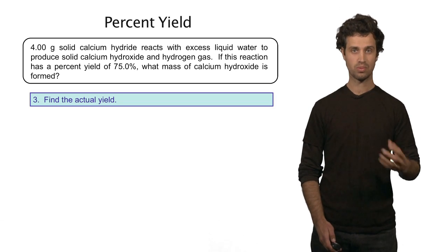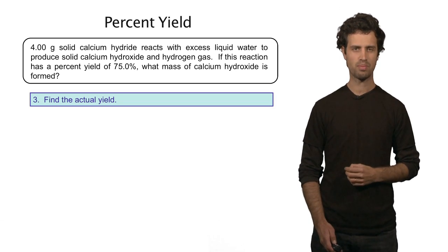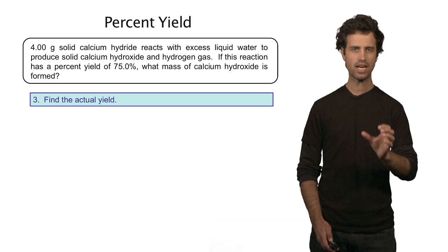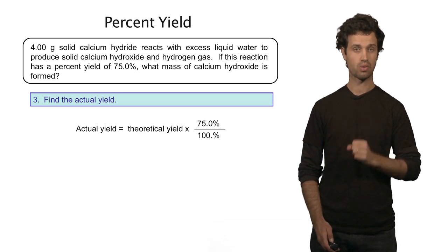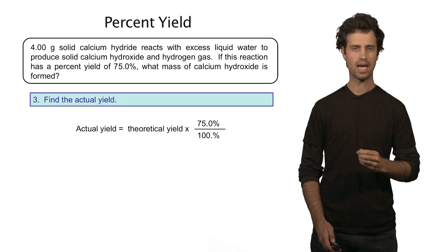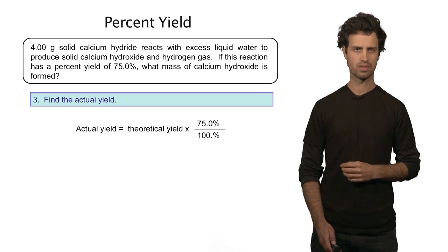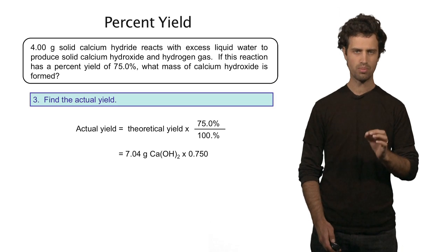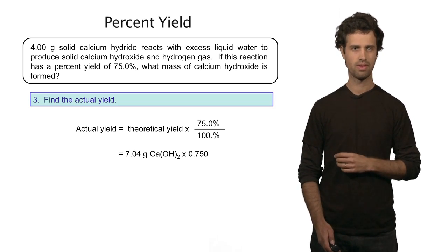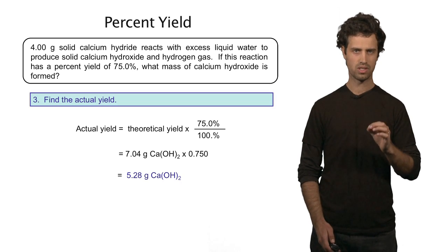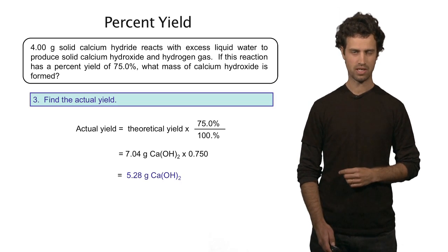So, the actual amount, the actual yield is the expected amount, the theoretical one we just calculated, times 75 divided by 100. That is 7.04 grams times 0.75 and that equals 5.28 grams of calcium hydroxide.